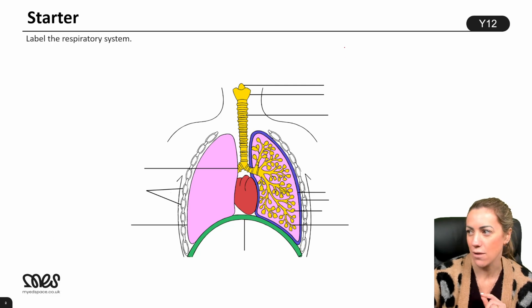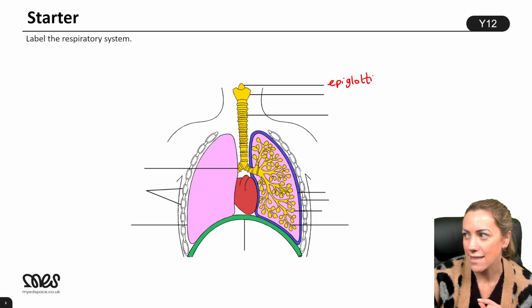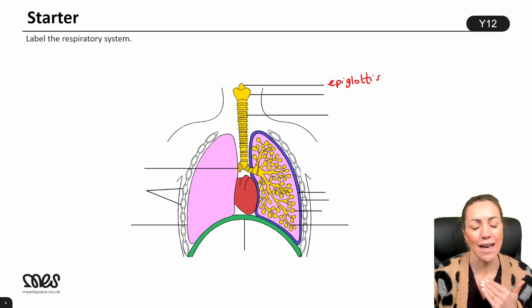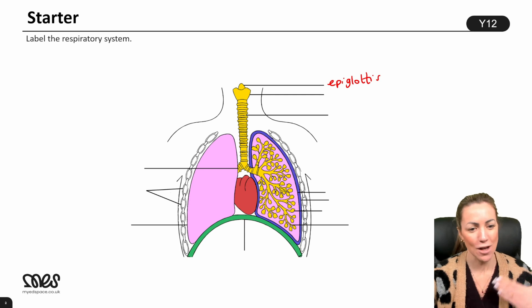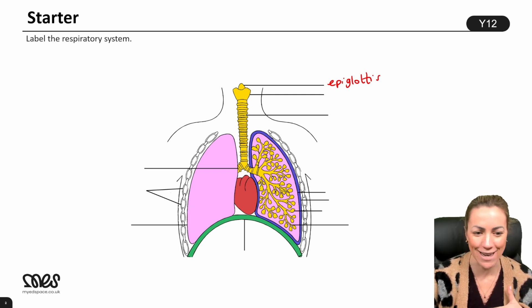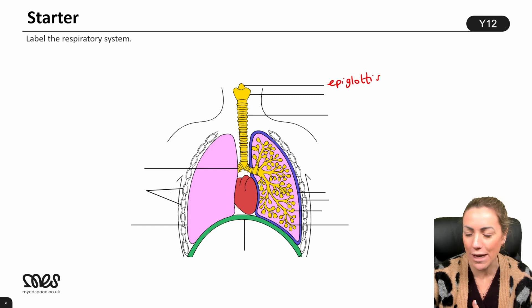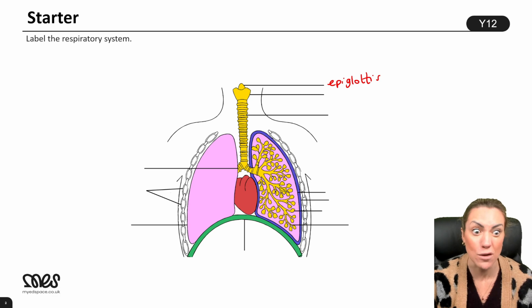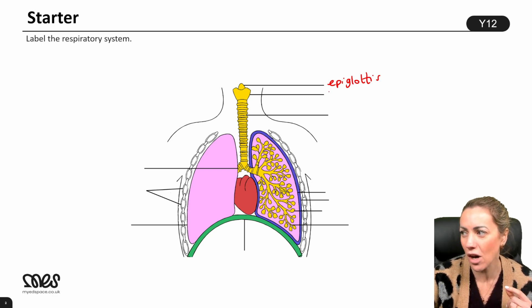Starting at the top, this is the epiglottis, which is a little flap that covers the trachea when you swallow food. Obviously you don't want food going down the trachea — the food needs to go down the esophagus into the stomach. So the epiglottis covers the trachea to stop food going down it.